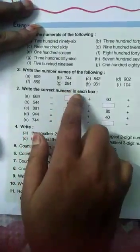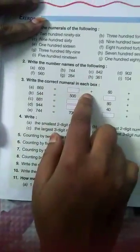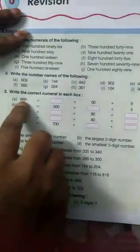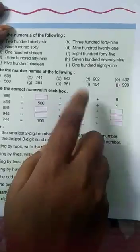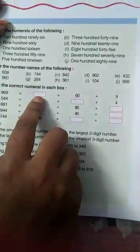Question number 3 is write the correct numeral in each box. You have to fill the box in expanded form according to their place. 9 is in ones place, 6 is in tens place, and 8 will be in hundreds place, so your answer is 800. Like this you have to fill all the boxes.